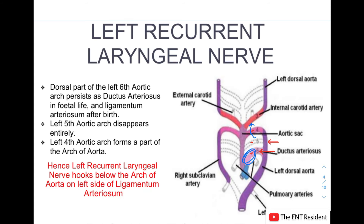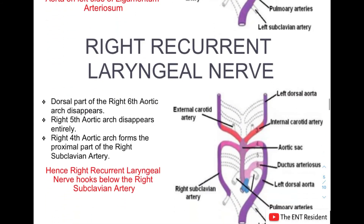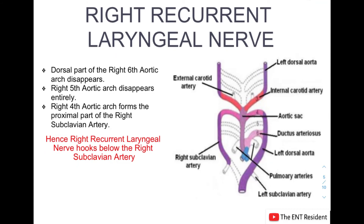On the right side, the right sixth aortic arch completely disappears, and the fifth arch also disappears. Only the right fourth aortic arch remains, forming the proximal part of the right subclavian artery. As a result, the right recurrent laryngeal nerve hooks underneath the right subclavian artery. So on the right side, the origin is underneath the fourth aortic arch, whereas on the left side it hooks underneath the ligamentum arteriosum, which lies more inferiorly.